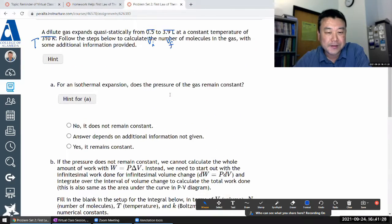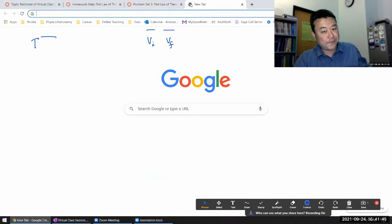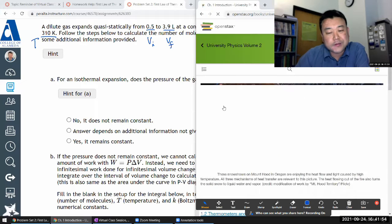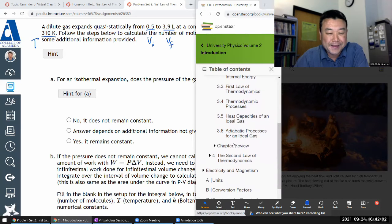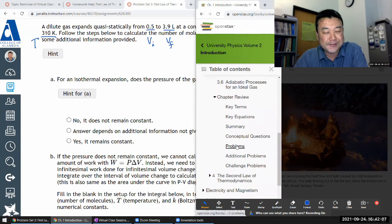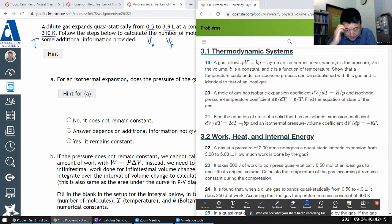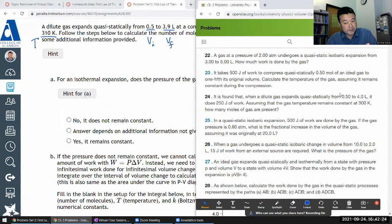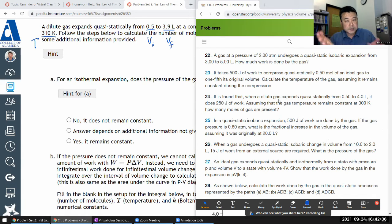So maybe I should provide a little bit of background for this question. This is actually a textbook question. And in the textbook, they don't give you a lot of help and I thought that was kind of hard. So this rewritten version is my attempt at being helpful. Let me just show you the textbook version of the question where this comes from. It is found that a dilute gas expands from one volume at some temperature, does this amount of work, and asks how many moles of gas are present.